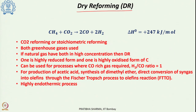Another method of reforming is dry reforming, also known as carbon dioxide reforming or stoichiometric reforming. The key difference from earlier processes is that here carbon dioxide is used as the oxidant — methane reacts with CO2 to produce syngas. Both the feedstock and the oxidant are greenhouse gases, so using them reduces carbon footprint. If the natural gas already has a higher CO2 content, it can directly be used for dry reforming rather than going through gas cleaning.